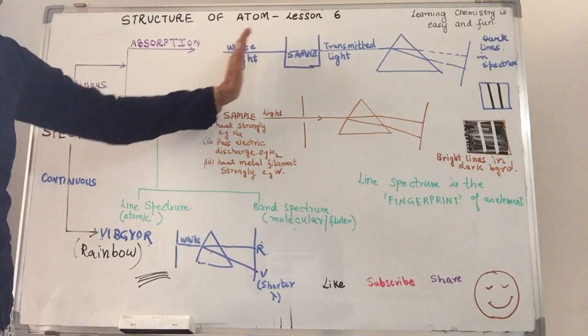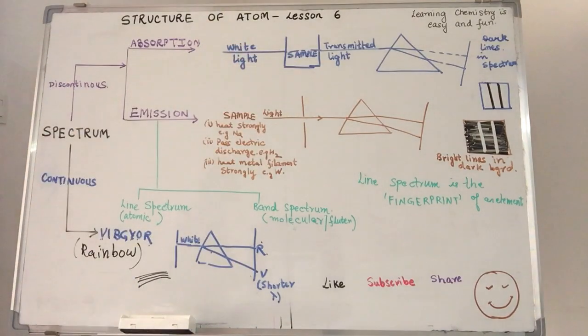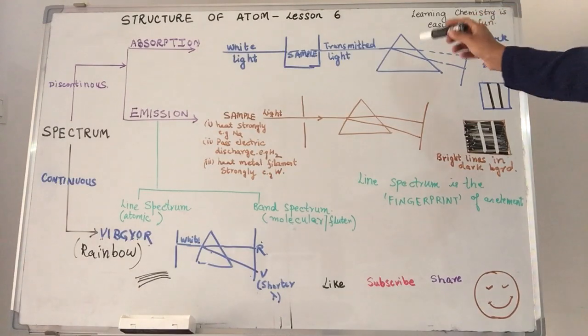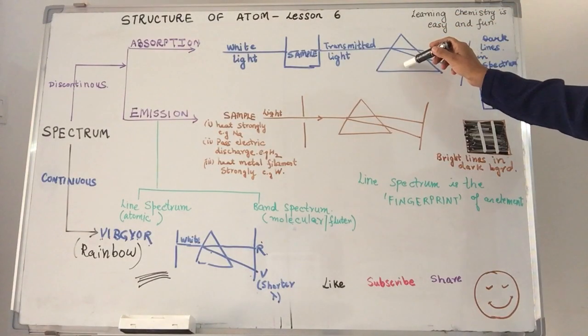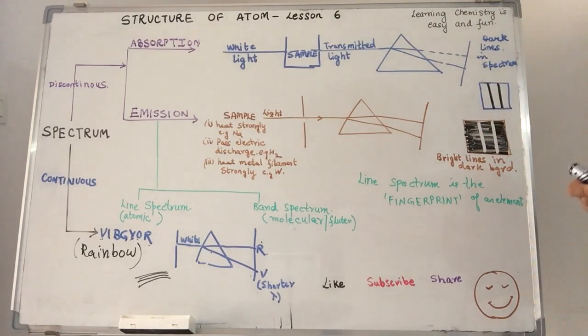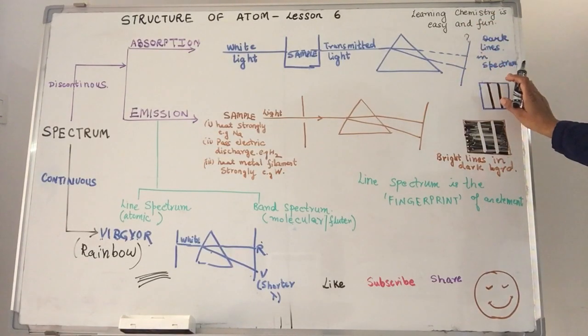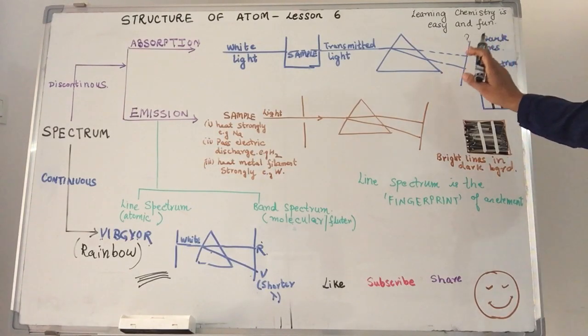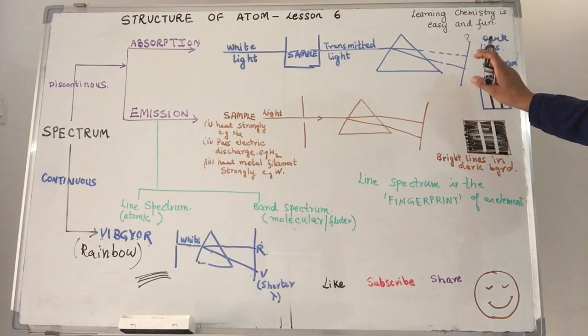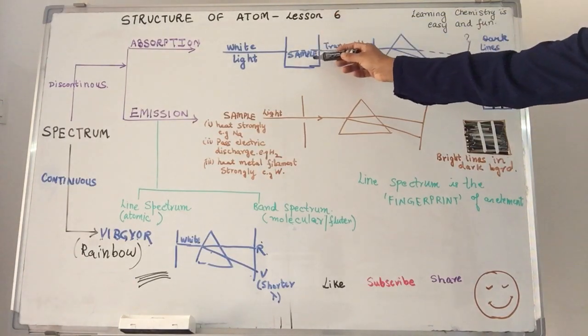The light after passing through the sample is named as transmitted light. Now this transmitted light is passed through the prism to divide it into its corresponding wavelengths. After the light gets divided, we observe it on a photographic plate. When we observe it on a photographic plate, the image that we get is what we call a spectrograph and when we also measure their frequencies or the wavelengths corresponding to them, then it is also called a spectrometer.